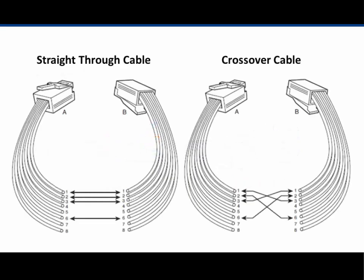A straight-through cable has wires that match on either end of the cable — the wires are run to the same pins on either end. The cable connects on the right and on the left, flipped upside down, but pin 1 goes to pin 1 — this is a straight-through cable.